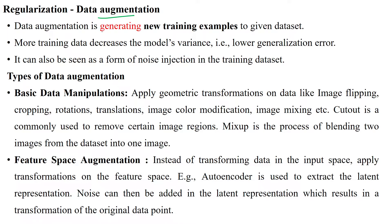Another regularization method is data augmentation, which generates new training samples for the given dataset. More training data decreases the model's variance — when you increase the number of samples in the training data, there is the possibility of reducing overfitting. This is also seen as noise injection into the training dataset when generating more samples from already existing samples.